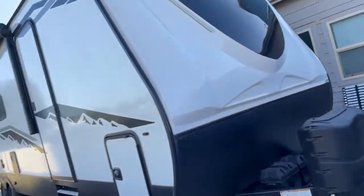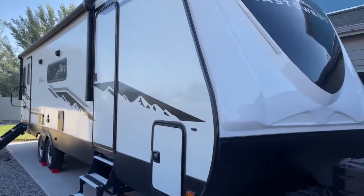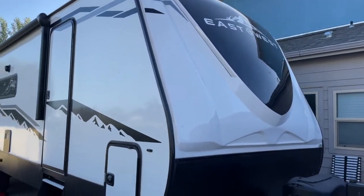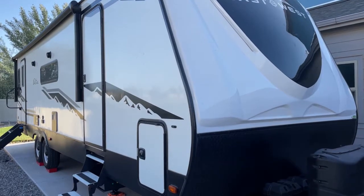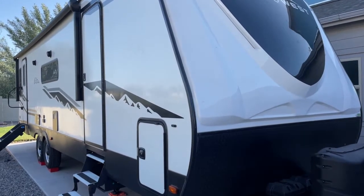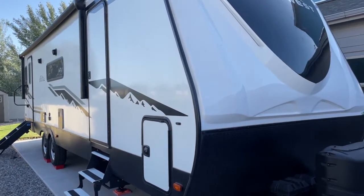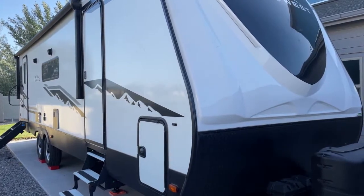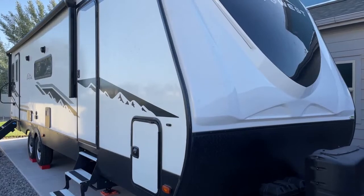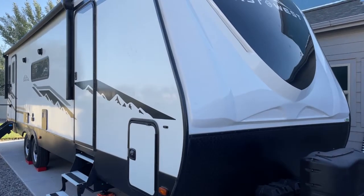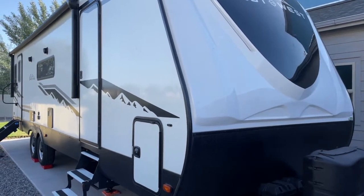So this is a 2850 KRL manufactured by East to West, it's the Alta and it comes stock with solar on it. This solar system is a 50 watt solar system. Some of the brand new models are coming out with 100 plus watt solar systems, but mine currently has a 50 watt system on it. So I'm going to show you what needs to be done to be able to run lithium batteries.